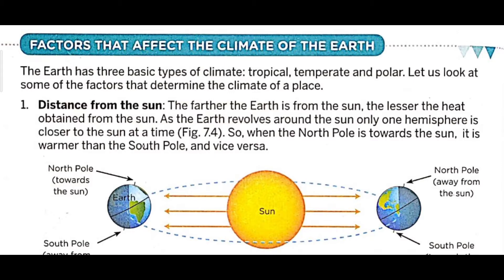The earth has three basic types of climate: tropical, temperate, and polar.